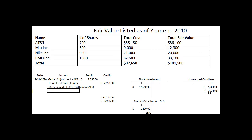One last note: if you have worked through the trading securities problem, you'll notice that the unrealized gain and loss account clears out every year. That's because it goes on the income statement for that year and gets flushed out as part of the closing process. But for available-for-sale securities, this unrealized gain is a balance sheet account — it doesn't get flushed out every year. It remains in the unrealized gain or loss account.